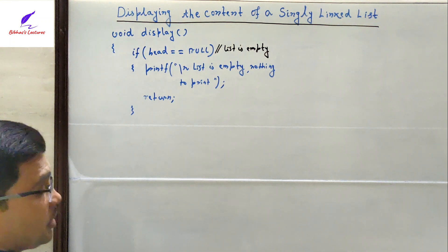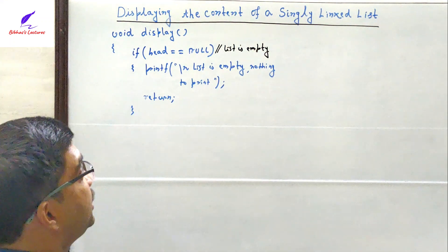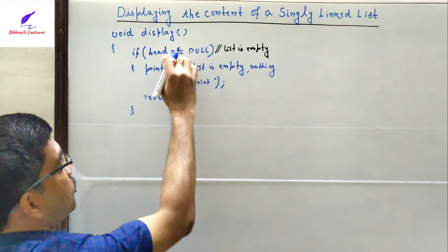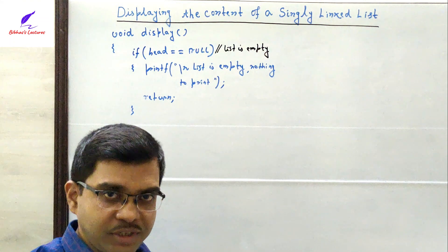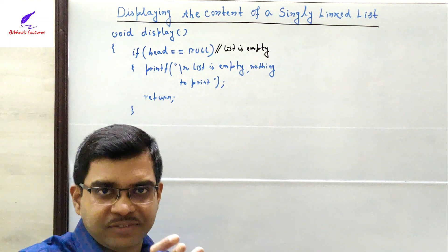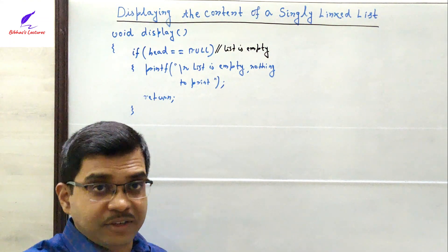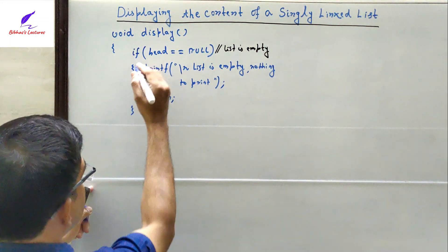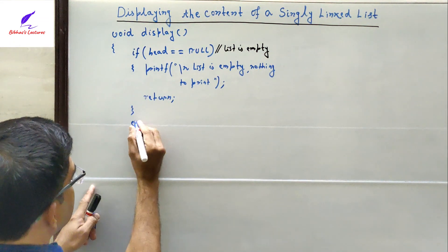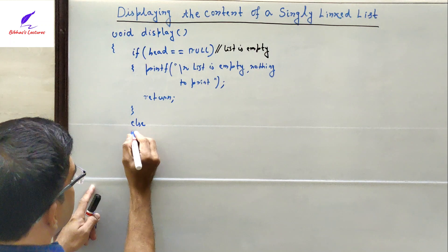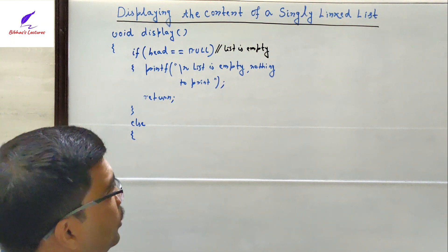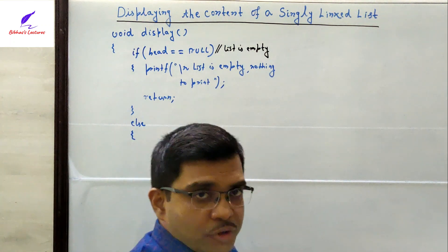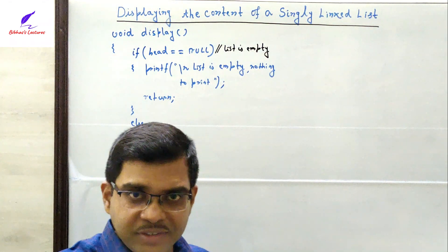We then simply return back from the function. If the condition is not true — meaning head is not null — the list exists, and the else part will be executed.